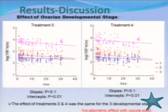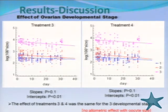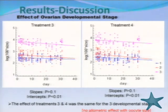Further analysis of covariance concerning the ovarian developmental states showed that there was no significance in the intercepts, which is logical given the three different groups. There was also no significant relationship between the three slopes, meaning the effect of treatments three and four was the same across all three developmental states, with no allometric effect with oocyte size.